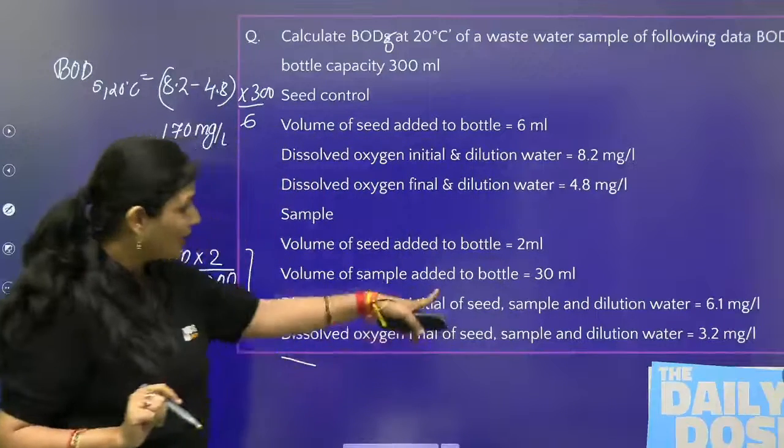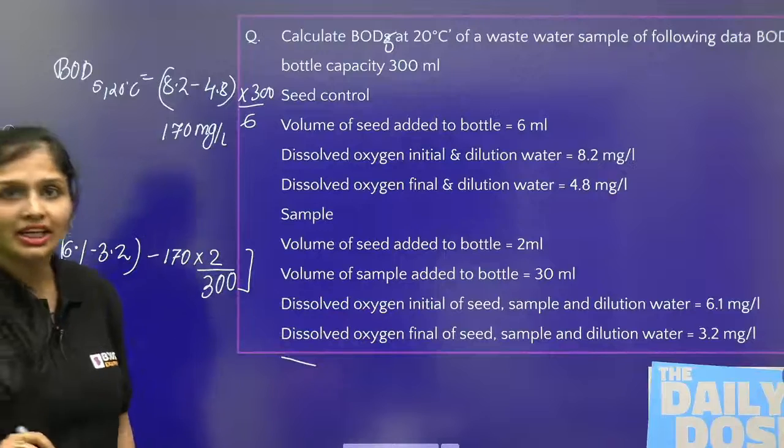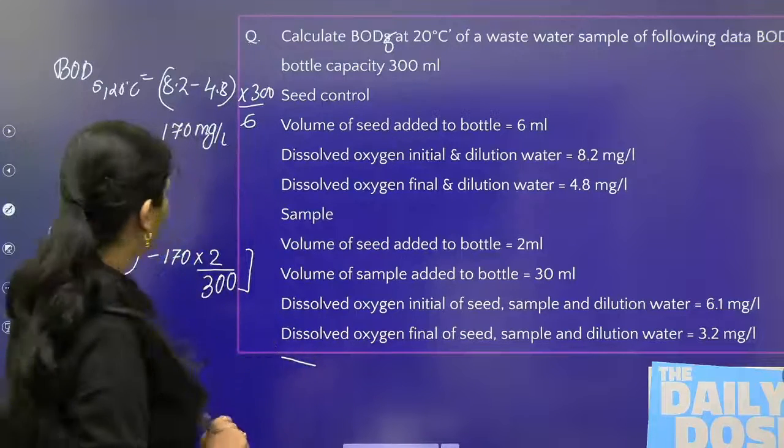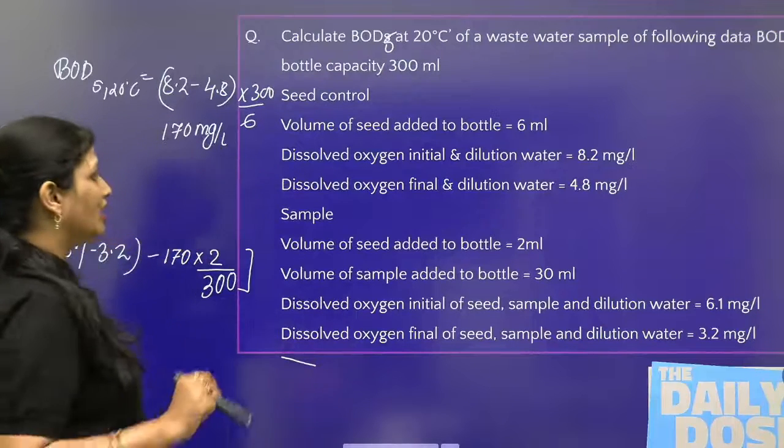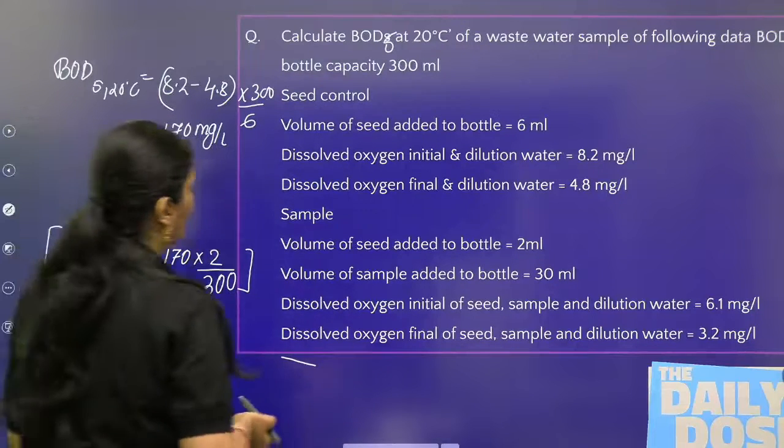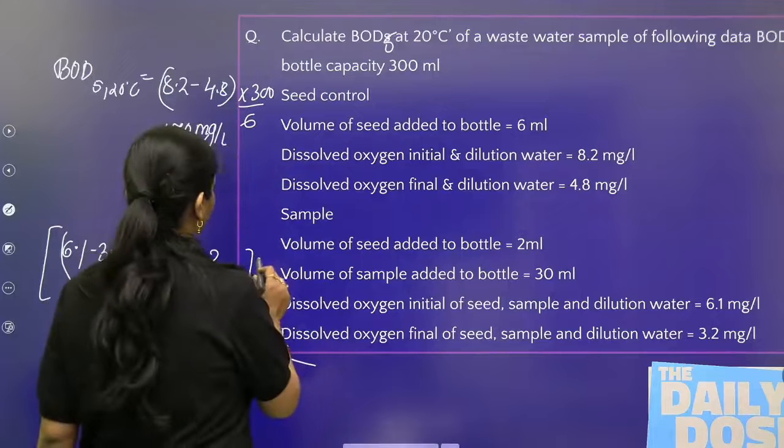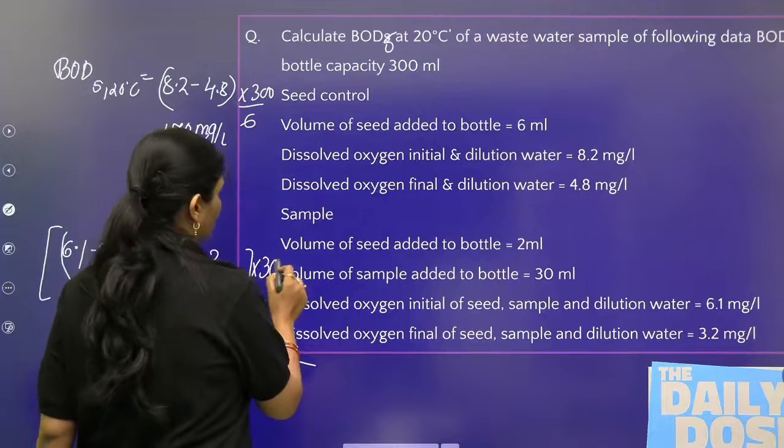This will be your BOD of diluted sample, because the sample is diluted here. There was not proper oxygen available if undiluted. If you want to calculate the BOD of test sample, then you have to multiply with dilution factor. Dilution factor is not given directly in the question.